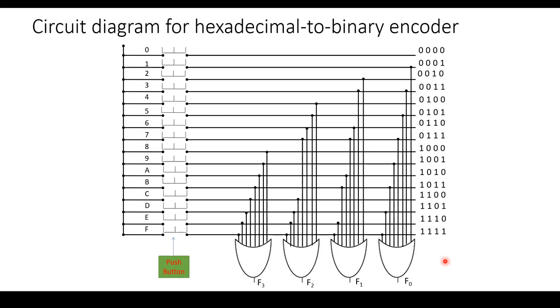This is how you draw the circuit diagram for the hexadecimal to binary encoder. In board exams they may ask you either one. It is very simple to draw once you know the binary equivalent for the decimal or hexadecimal numbers. Hope you understood this video — meet you in the next video. Thank you.